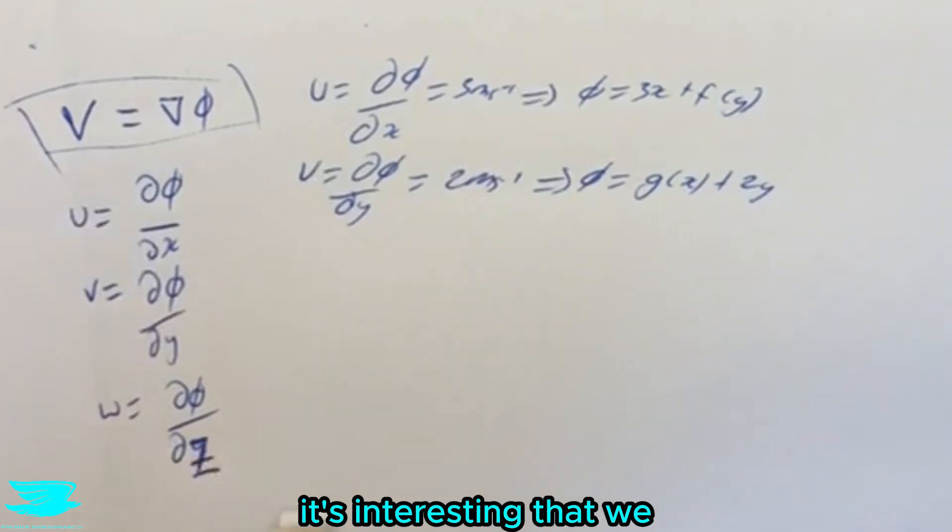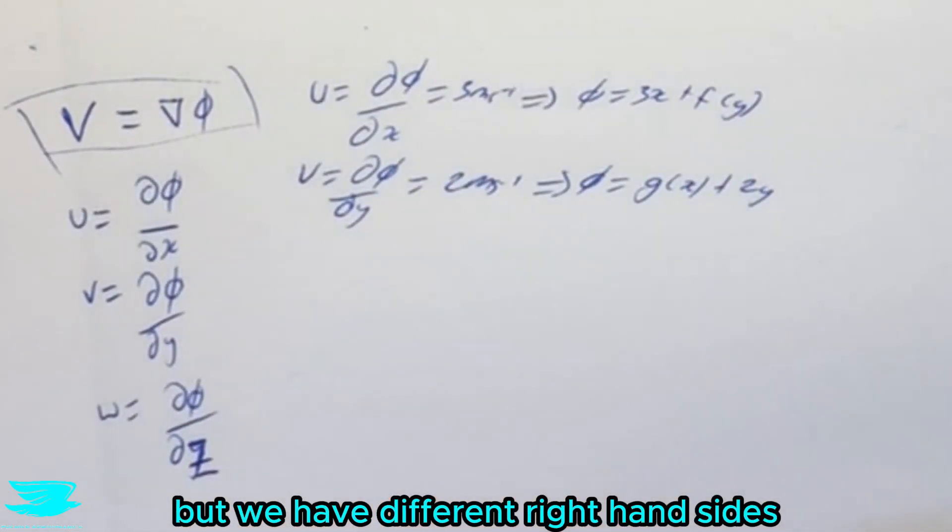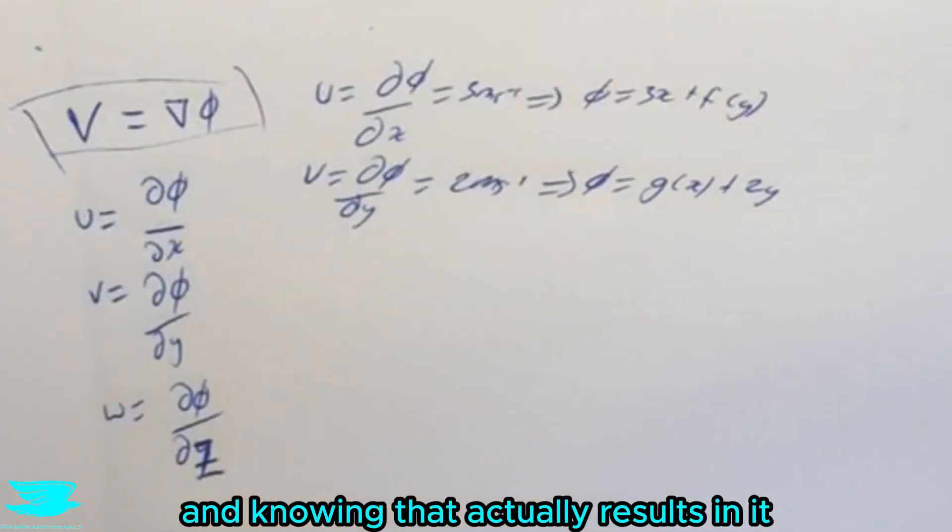Now it's interesting that we have the exact same function phi but we have different right hand sides. They are the same function, they should equal each other, and knowing that actually results in it being very simple to calculate what f(y) is and what g(x) is because we know that phi here equals phi here.